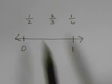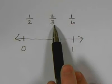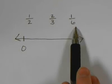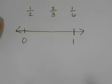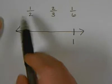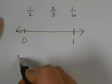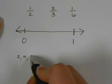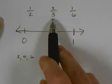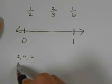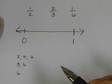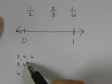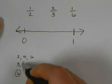For this example, when we look at our denominators, they are all three different. So we need to find a least common denominator to put our fractions on the number line. First, we write multiples for 2: 2, 4, 6. The next one, 3: 3, 6. For 6: 6. Now we can find our least common denominator is 6.